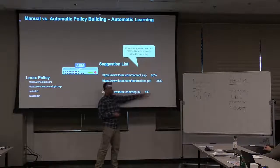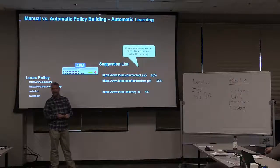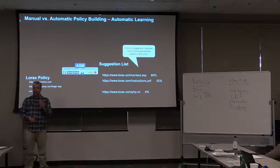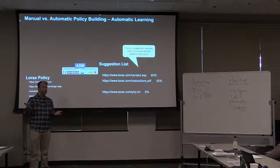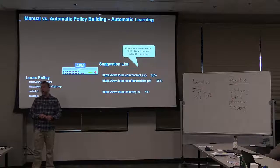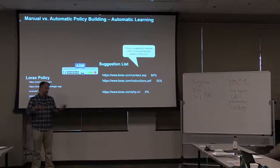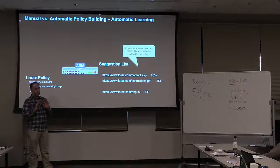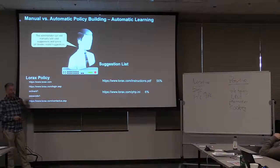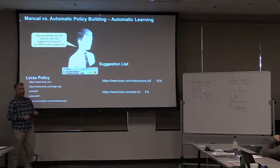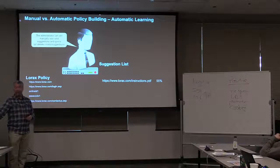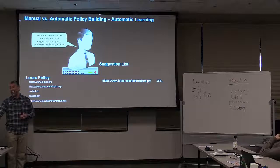What happens if a bad entry hits 100%? It gets added to the policy. So in automatic learning, the administrator needs to monitor and take bad items out — preferably ignoring them so they don't reappear. Because once they're ignored and not in the list, there's no more learning score increase and no worry about those being added to the security policy.